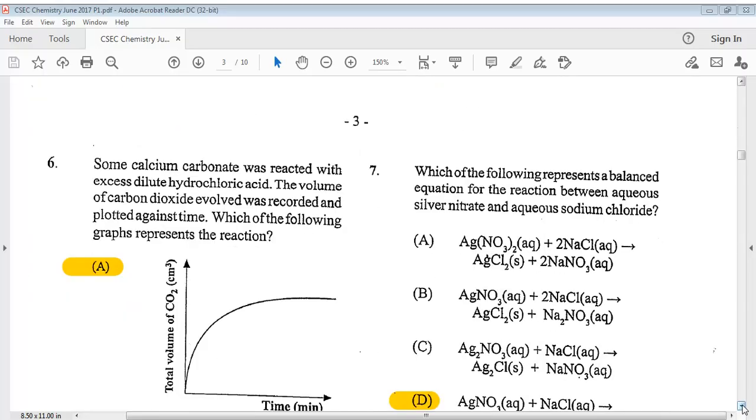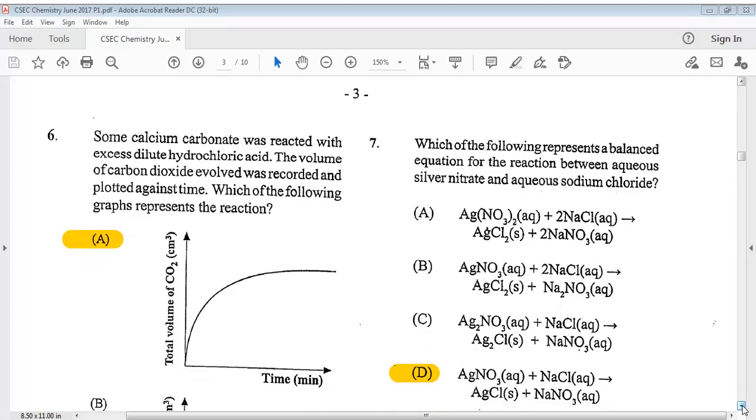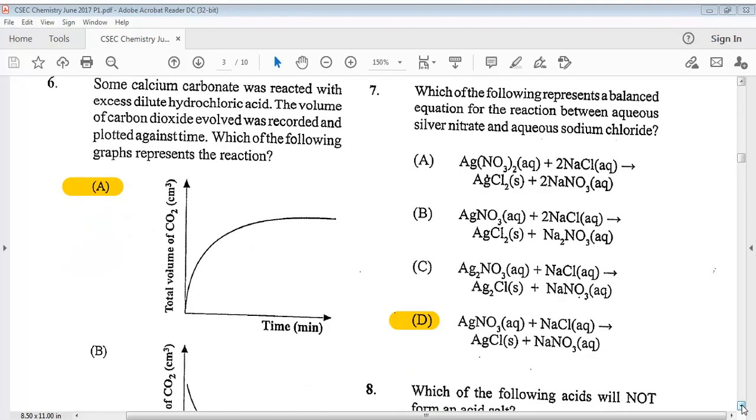Item 6, question 6. It says, some calcium carbonate was reacted with excess dilute hydrochloric acid. The volume of carbon dioxide evolved was recorded and plotted against time. Which of the following graphs represents the reaction? And as you can see, the answer is A.